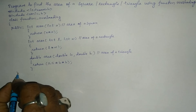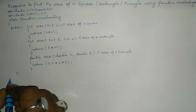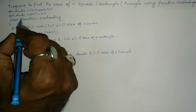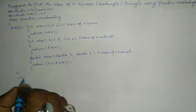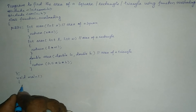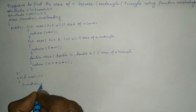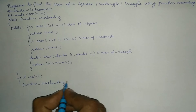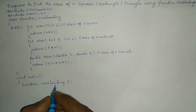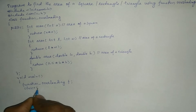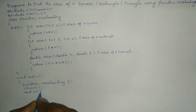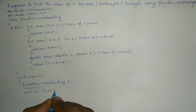Next we put the closing brace and semicolon, which indicates the termination of the class definition. Now it is time to create an object of this class type. In the main function we declare an object f of type function_overloading. Then we use clrscr, and print using cout with the message area of a square.